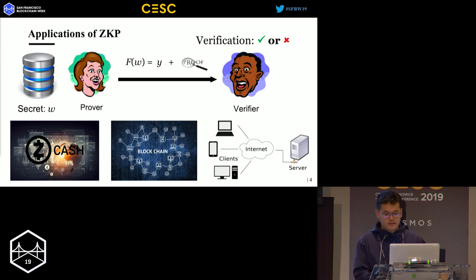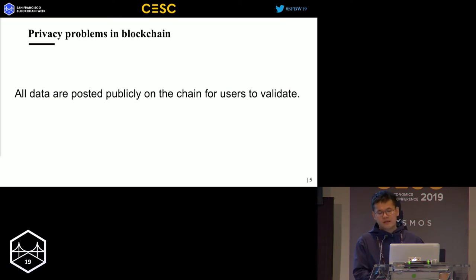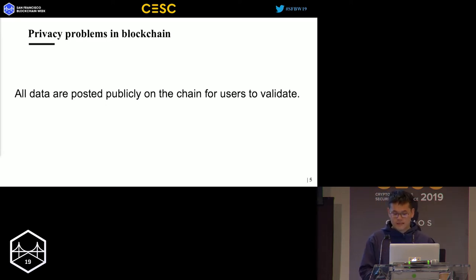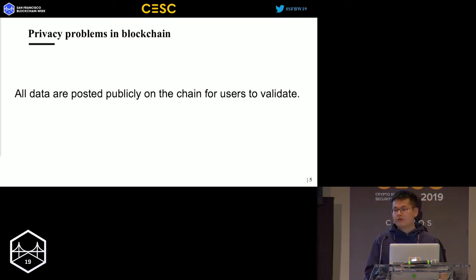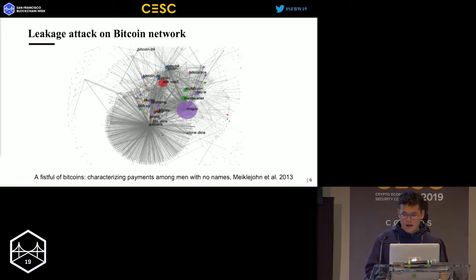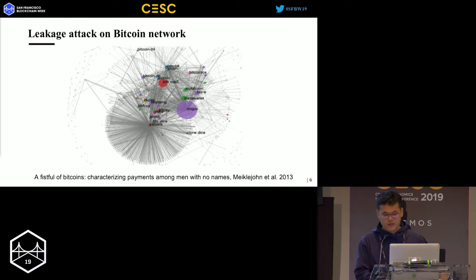Zcash is a good instance deployed on blockchain with this technique. Zcash builds a bridge between zero-knowledge proofs and original blockchain techniques, because there are several privacy problems in the original blockchain. All data are posted publicly on the chain for users to validate, meaning users can learn much information from the history of transactions. Using this public data, we could do data analysis and get much more information.